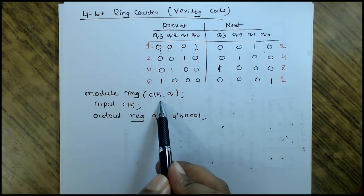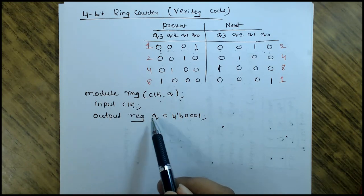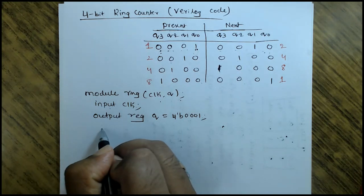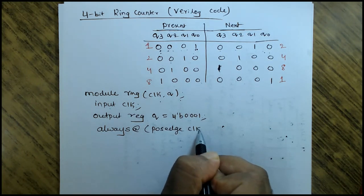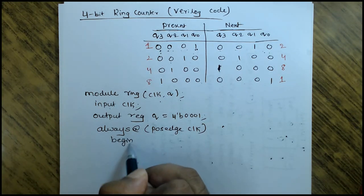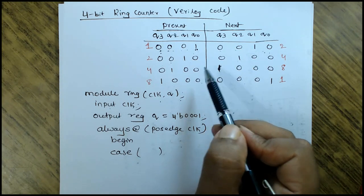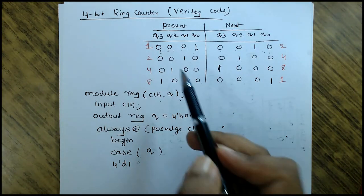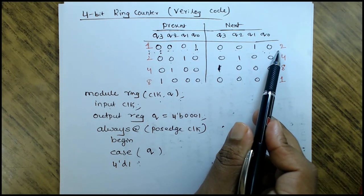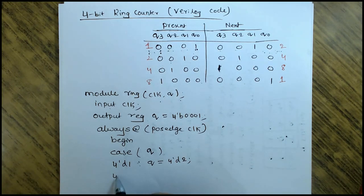Now we shall write the code. The module 'ring_counter' has one input and one output — you can include reset or omit it; let us keep it simple. Input is clock, output is declared as a register q, initialized to 0001. I use an always statement because for any counter always statement is a must: always at positive edge of clock, begin, case. I am using q itself as the select line to assign q a new value. When q equals decimal 1, the output should be assigned q equals 4'd2.